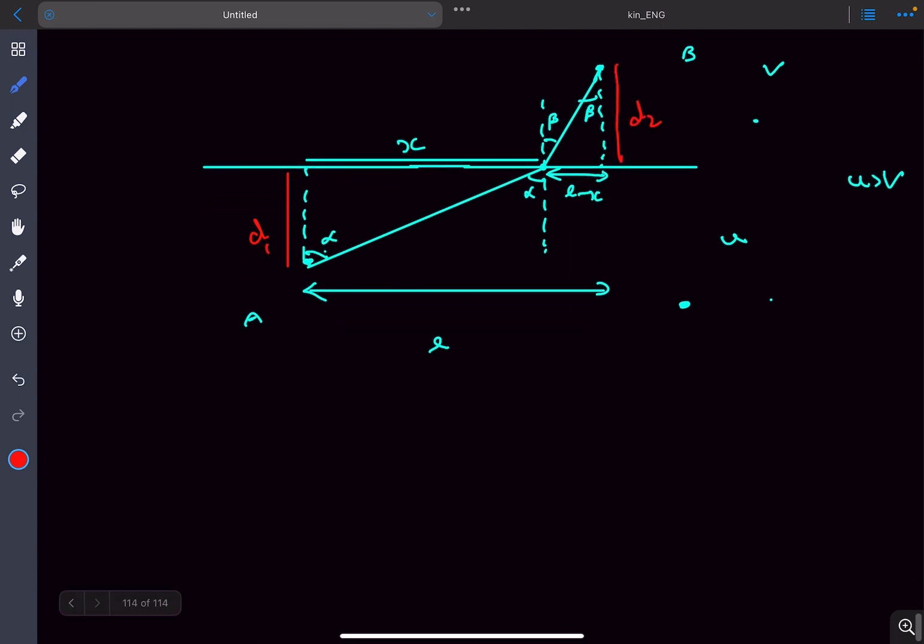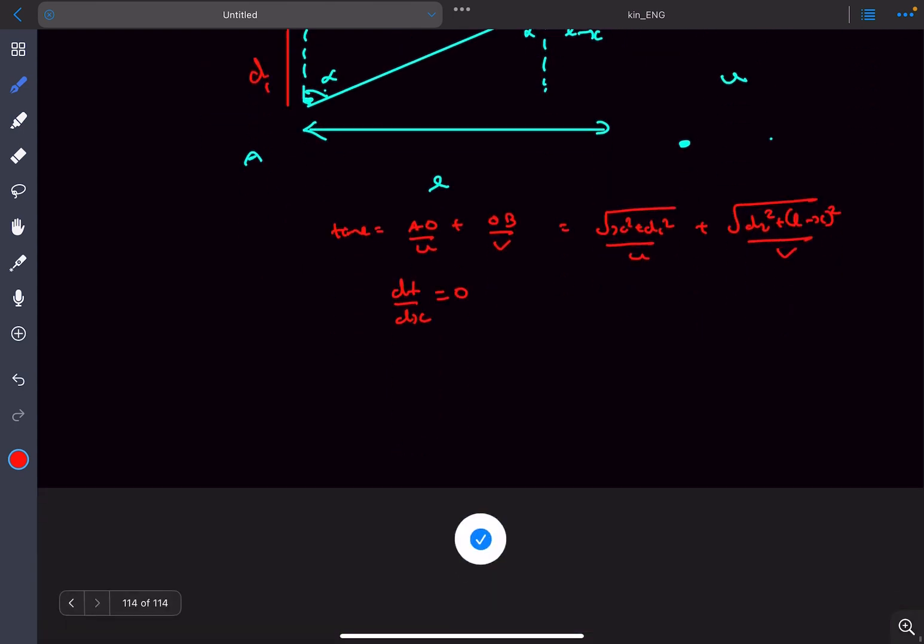Now we have to minimize the time. Let's say this point is O. The time taken will be AO divided by U plus OB divided by V. The distance AO equals square root of X squared plus D1 squared, and OB equals square root of D2 squared plus (L minus X) squared divided by V. Since we have time as a function of X, we'll differentiate time with respect to X and equate it to zero.